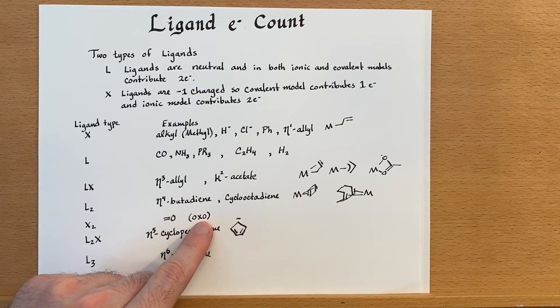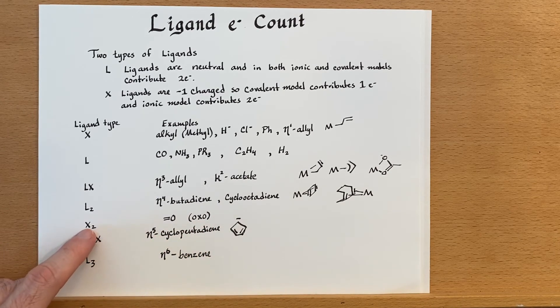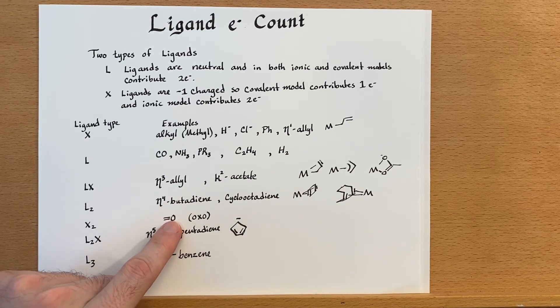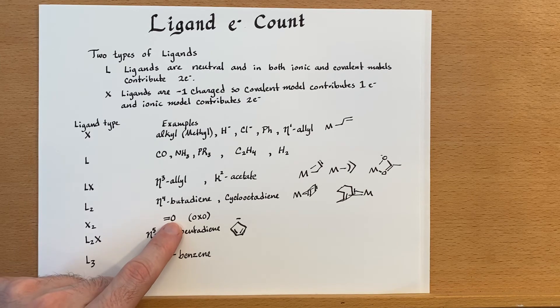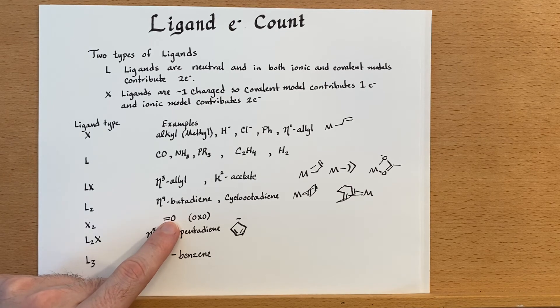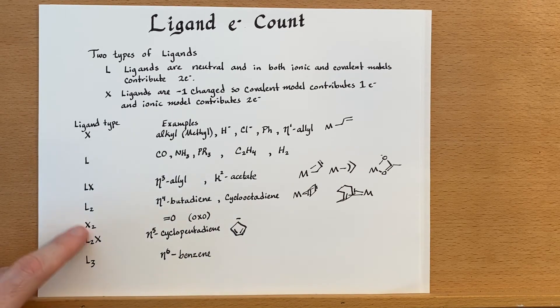The oxo ligand is two X2 ligands. This is considered a negative two charge on the oxygen. So in the covalent model, that would be two electrons, but in the ionic, it would be four.